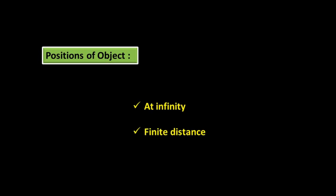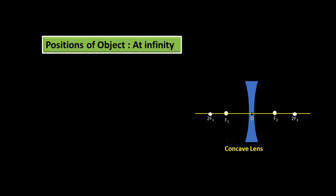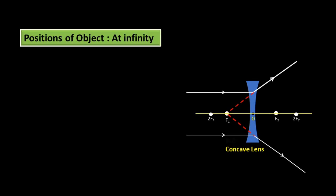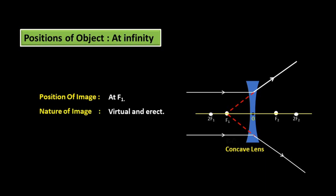Positions of object for image formation by concave lens: object at infinity, and object at finite distance. For object at infinity — the rays parallel to the principal axis, after refraction, diverge and appear to come from focus F1. Position of image: at F1. Nature: virtual and erect. Size: highly diminished.